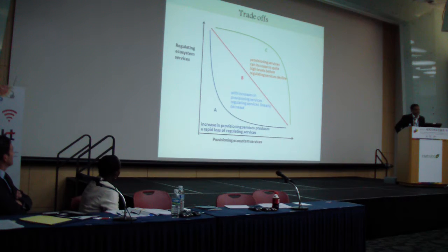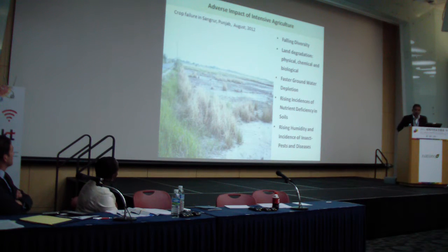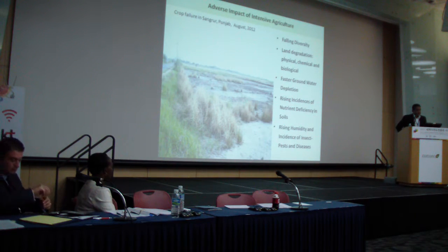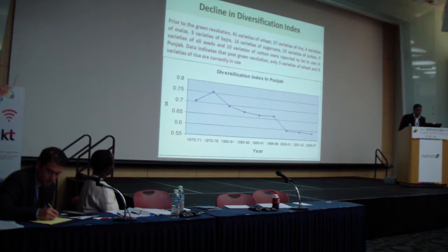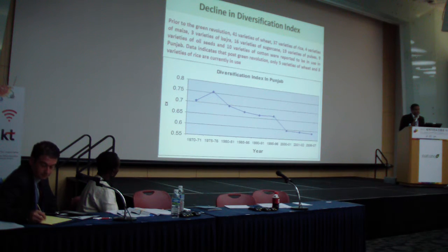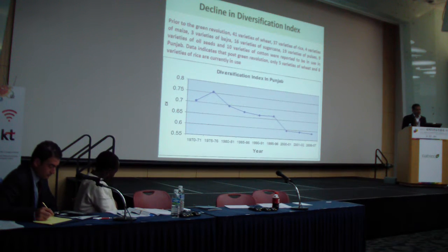Because of this intensive cultivation of rice and wheat, it has led to a loss of ecosystem services. These include: falling diversity of crops, land degradation, groundwater depletion, rising incidence of nutrition deficiency in soil, and rising incidence of insect pests and disease. The crop diversification index shows that earlier there were 41 varieties of wheat, 37 varieties of rice, and other varieties of crops. Now only 5 varieties of wheat and 8 varieties of rice are grown. This fall in diversity has led to a monoculture system of cropping, which has caused severe degradation of ecosystem services.